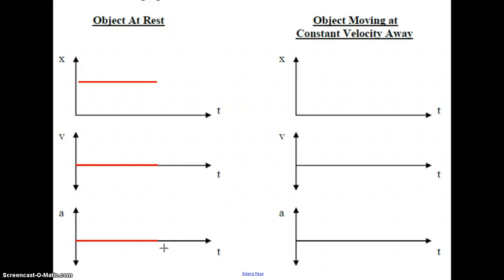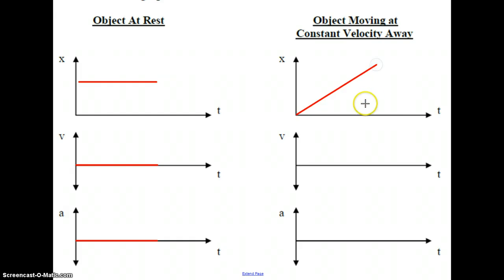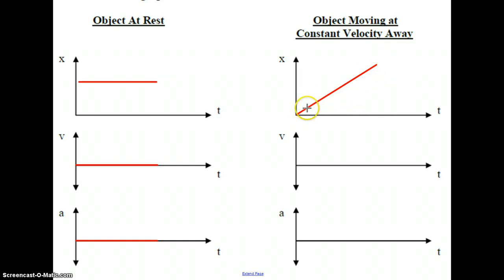We now go to an object moving at constant velocity away. That means the velocity is constant but the distance is increasing over time, which results in a straight line sloped upward on the XT graph. The X numbers are getting bigger as time moves in a positive direction. The fact that the line is straight means the rate of change of displacement is staying constant — that means constant velocity.